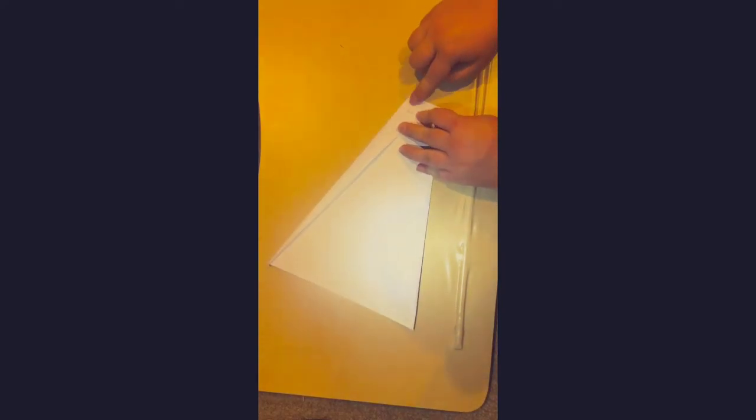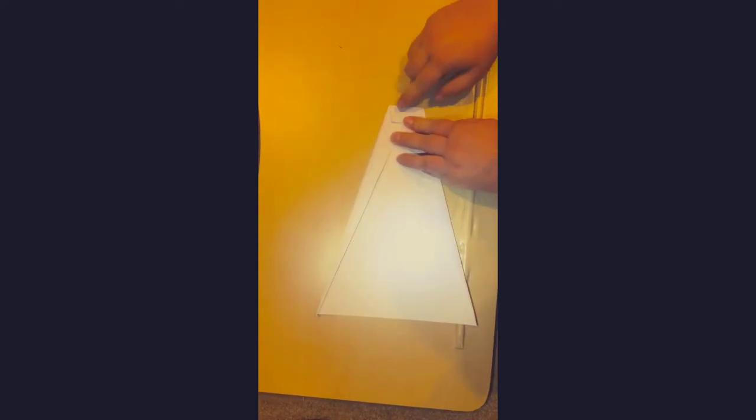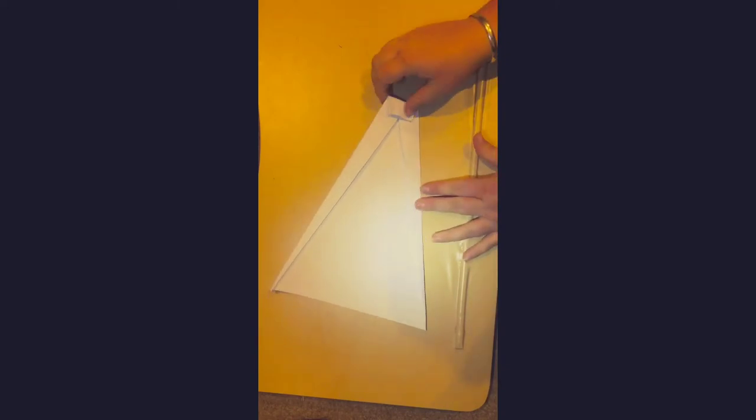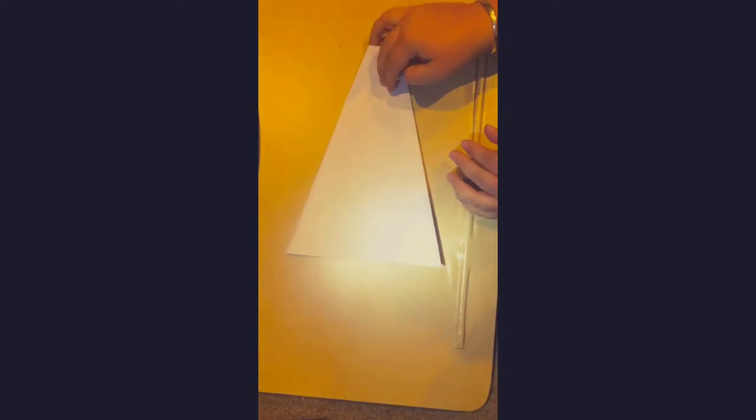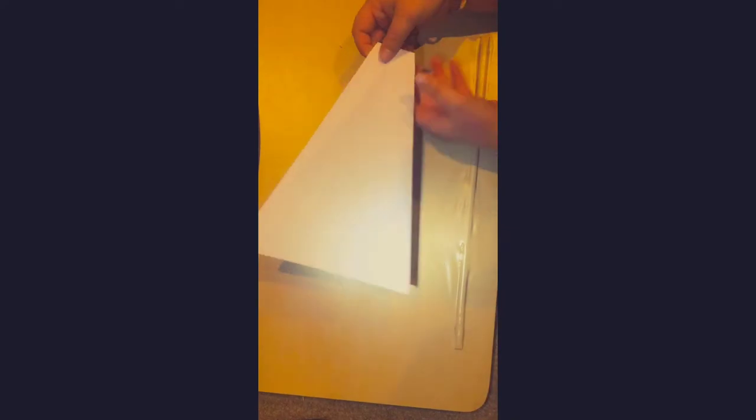Make sure it's nice and pressed down. All right, and then you've got it like that. So now it's time for the next part. We're going to flip it over. All right, and we're going to fold it in half. Now this is where it starts to look a little bit more like a plane.